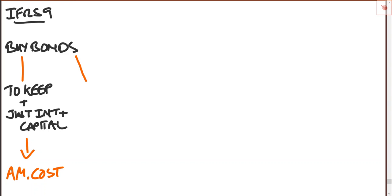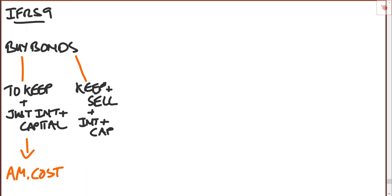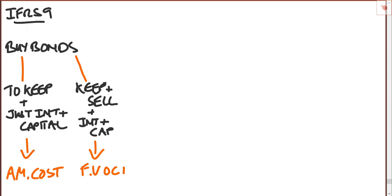But what if you were going to do different things depending on the bond? For example, you might have a business model to keep some and sell some — so some bonds you keep, some bonds you sell — and it's still interest and capital. Well in that case you take them at fair value through other comprehensive income. So you're going to keep some, sell some, and it's just interest and capital: fair value through other comprehensive income.